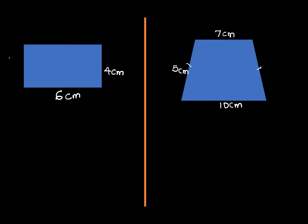In our previous lesson we saw how to find the perimeter of a figure. Let's take a quick review of what we talked about. So if you need to find the perimeter of this figure — this is a rectangle and we know that opposite sides of a rectangle are equal. So this means that here we also have six centimeters.